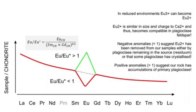The europium anomaly, in geochemistry, is the phenomenon whereby europium concentration is either depleted or enriched in a rock relative to the other rare earth elements. A europium anomaly is said to be negative if europium is depleted relative to the other rare earth elements if the europium concentration ratio is less than 1, and is said to be positive if europium is enriched relative to the other rare earth elements if the europium concentration ratio is greater than 1.